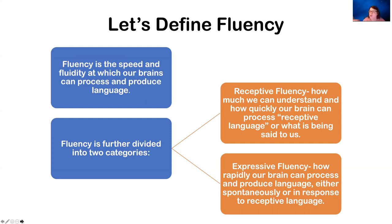I further divide fluency into two categories. We have receptive fluency — how much we can understand and how quickly our brain can process receptive language. Receptive language is listening and reading; our two receptive sensory receptors are your eyes and your ears: what you can read, what you can hear, what you can understand, and what you can listen to.